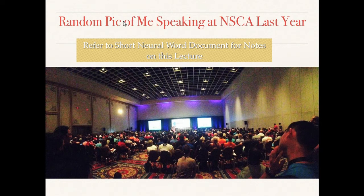All voluntary movement begins in the motor cortex with intent. You have an intent to want to do something — an intent to want to run, an intent to want to bench press. The motor cortex is a region that's lateral in the brain — the wrinkly outer region, the cortex. Laterally, we have the motor cortex.